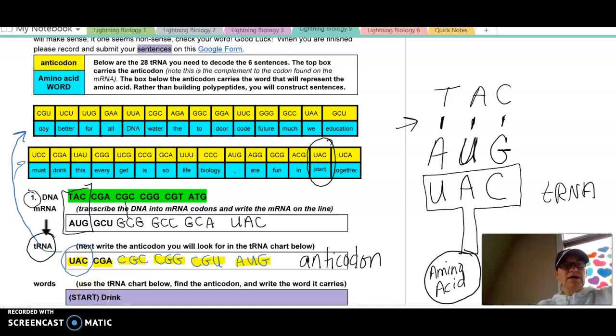Then I go to my next anticodon. It's CGA. So I'm going to go up here in the yellow and I'm going to look for CGA. And I find it right here. And right below it is the word drink. So CGA, the word drink. So I'm going to write the word drink.